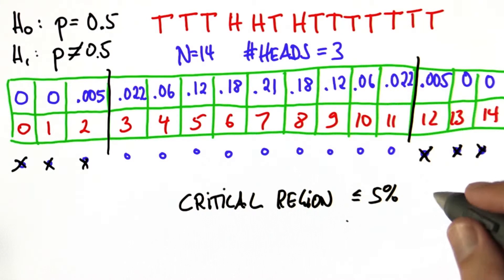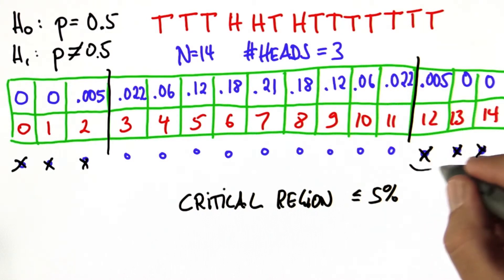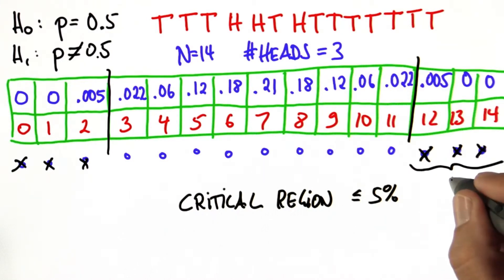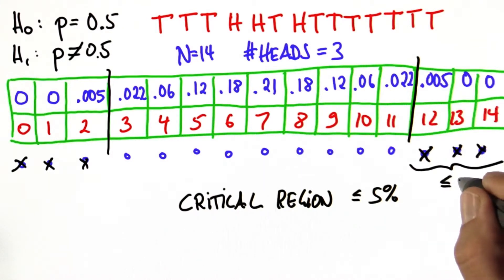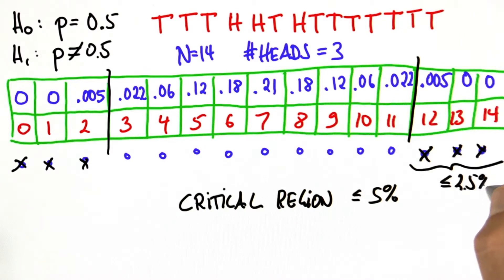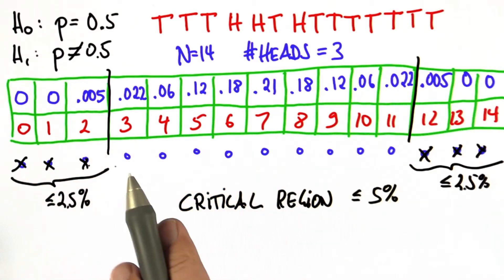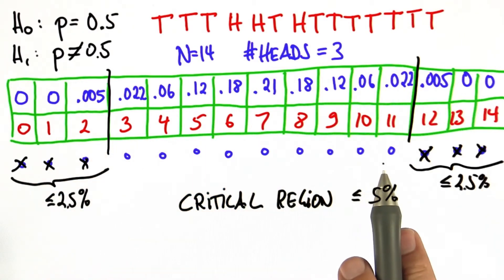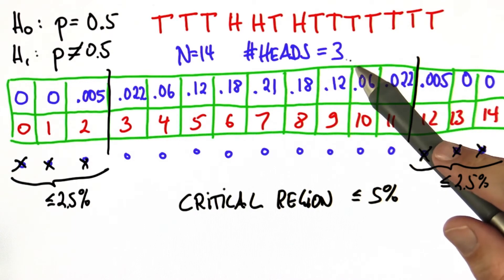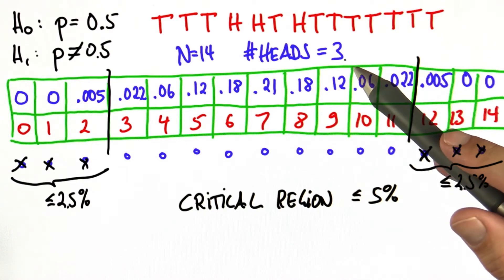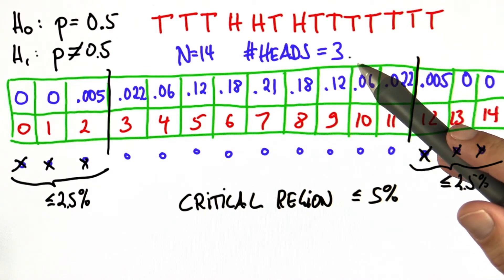Now, since we know that these must be small or equal to 2.5% each, we have to exclude 3 in 11 from the critical region, and we shall be fine for this two-sided test.